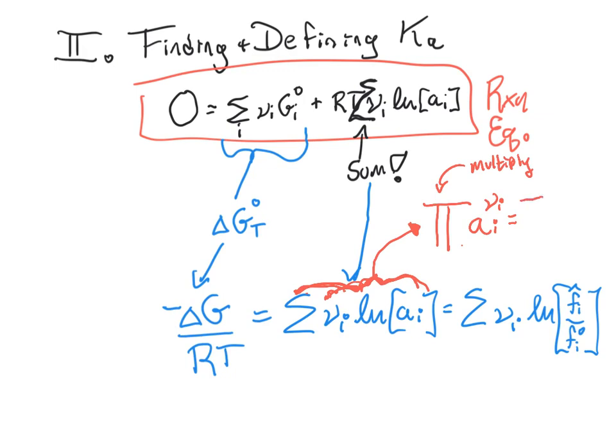Or equivalently, we might say capital pi and then write it in terms of fugacity. So either of these is fair game, is a fair move. So that's the mathematical trick.